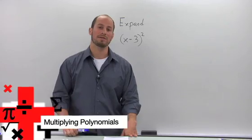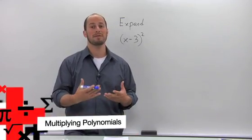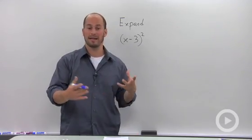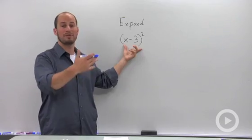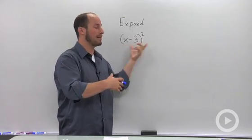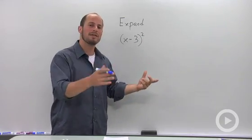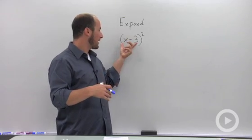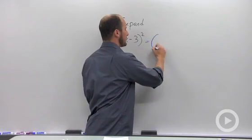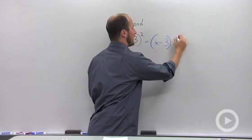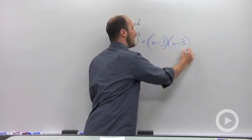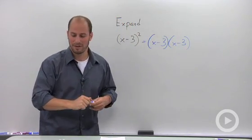Multiplying polynomials is basically expanding a term to a power or even sometimes just a term times a term. You know that when you have x minus 3 squared, what you're really doing is x minus 3 times x minus 3.